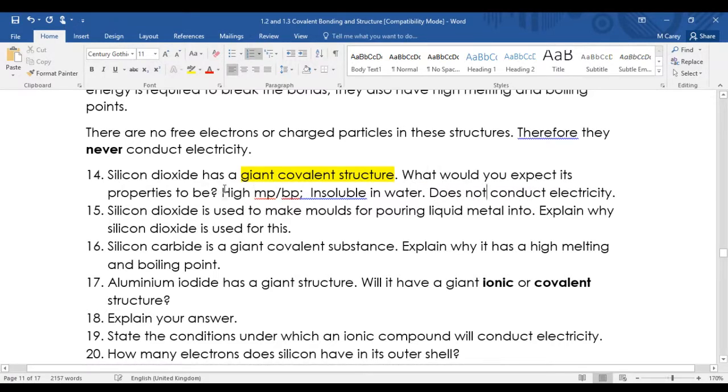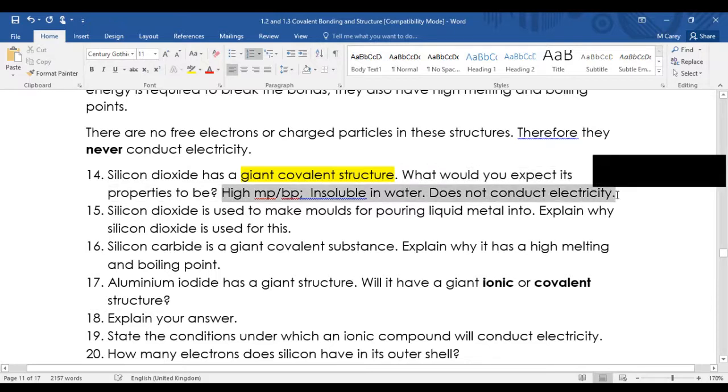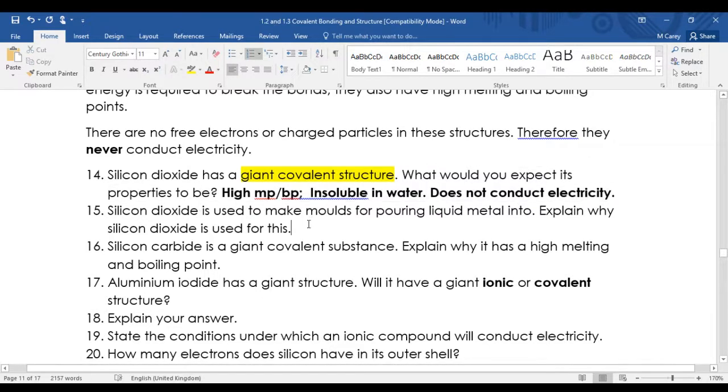There are the answers to that. I'll put this up after. Silicon dioxide is used to make moulds for pouring liquid metals into, so because of its high melting point.